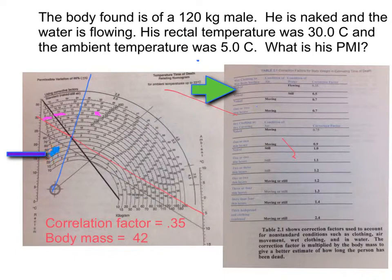I find the 42 line and follow that over. When I reach that, I notice that it is between the 4 and the 6, so it appears our individual died 5 hours earlier. My correlation factor is still within the 2.8 correction factor range, so my individual would have died 5 hours ago, plus or minus 2.8.